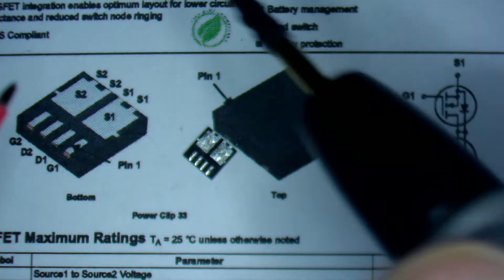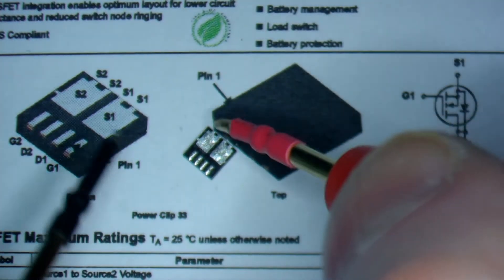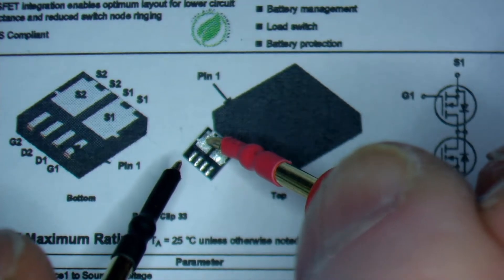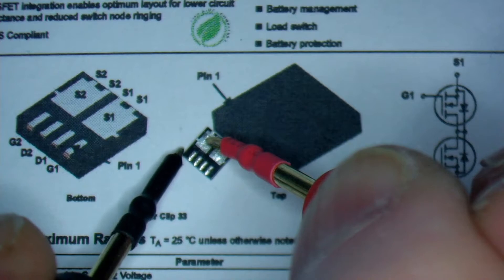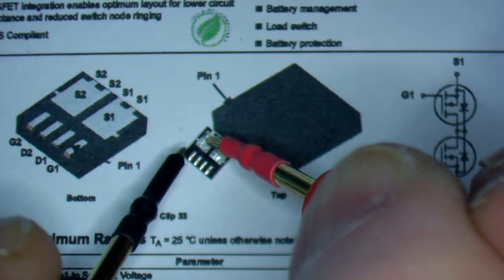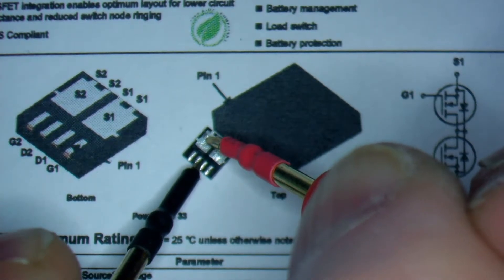So if you test N-channel MOSFETs, you should always put the red probe on source. In most MOSFETs it will be the biggest part on this thing. So if you put the black probe on the gate, you will actually discharge it. And it will close the MOSFET, it's not conductive anymore.